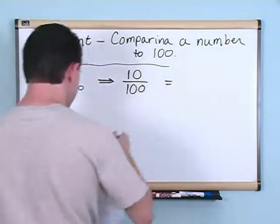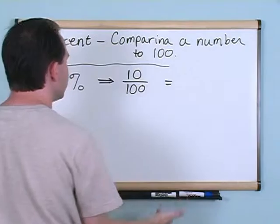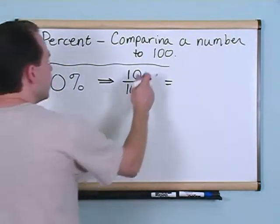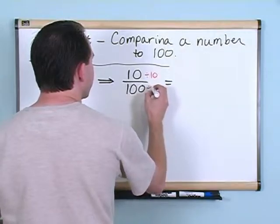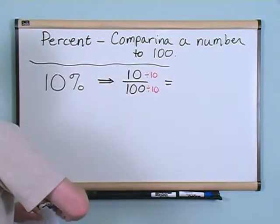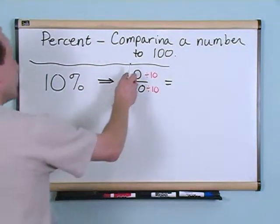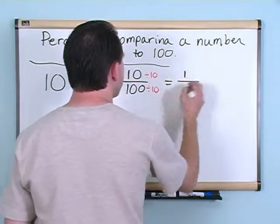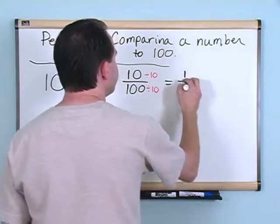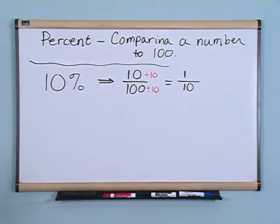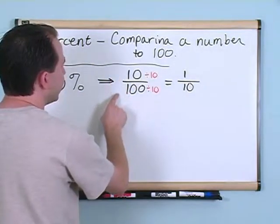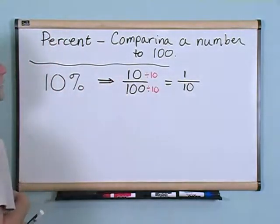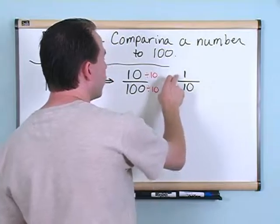Now just like with any fraction, you can simplify this fraction. This is a fraction that can be simplified. You can divide the top by 10 and divide the bottom also by 10. 10 divided by 10 gives you 1, and 100 divided by 10 gives you 10. So 10% is the same thing as 10 over 100, but I can simplify that to 1 over 10.